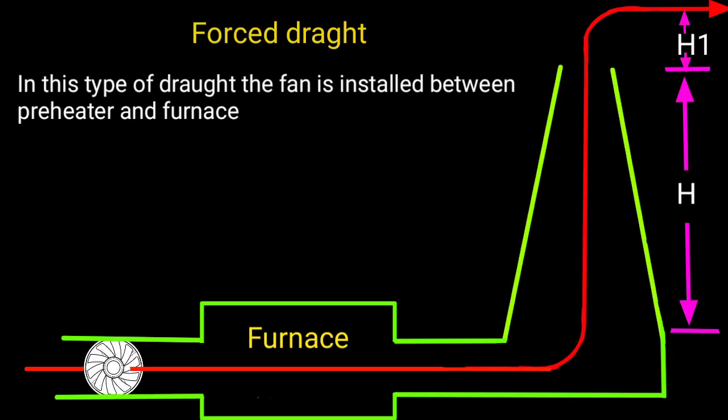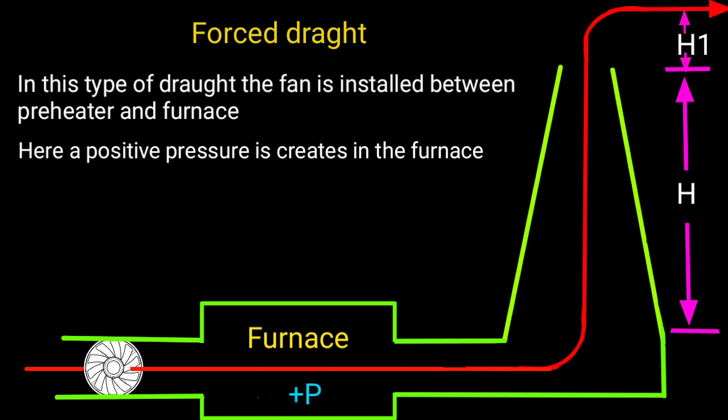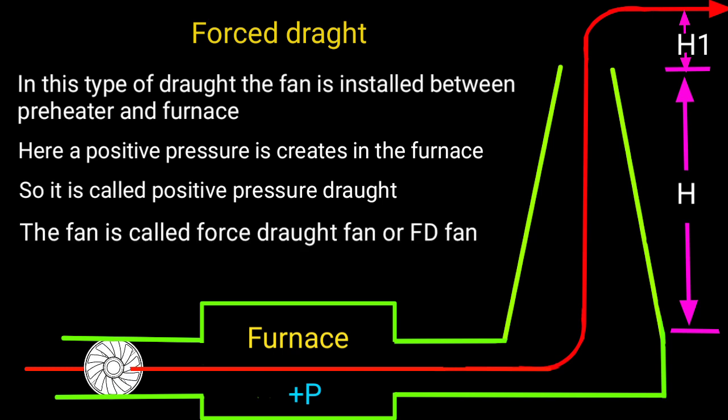Force draught. In this type of draught, the fan is installed between preheater and furnace. Here, a positive pressure is created in the furnace, so it is called positive pressure draught. The fan is called force draught fan or FD fan.